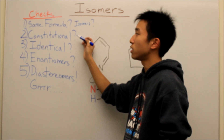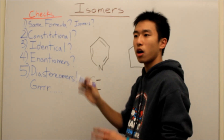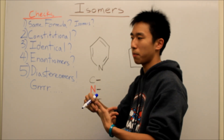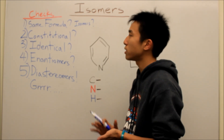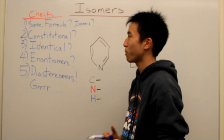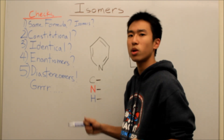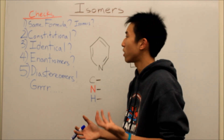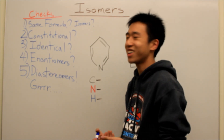The second check is the constitutional check — are all the atoms bonded to the same carbons and so on? This may not seem clear right now, but I'll show you later. The third is the identical molecule check. You want to make sure if your molecules are actually just identical, because if they're identical, then it's not even an isomer anymore.